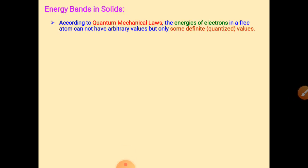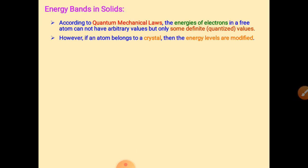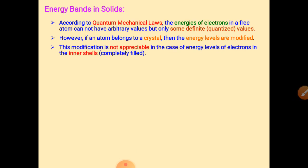Chapter 14, first topic: energy bands in solids. According to quantum mechanics, the energies of electrons in a free atom cannot have arbitrary values but only some definite values. Electrons are always moving in particular orbits according to their energy. If an atom belongs to a crystal, the energy levels are modified — electrons having more energy occupy orbits with larger radius.